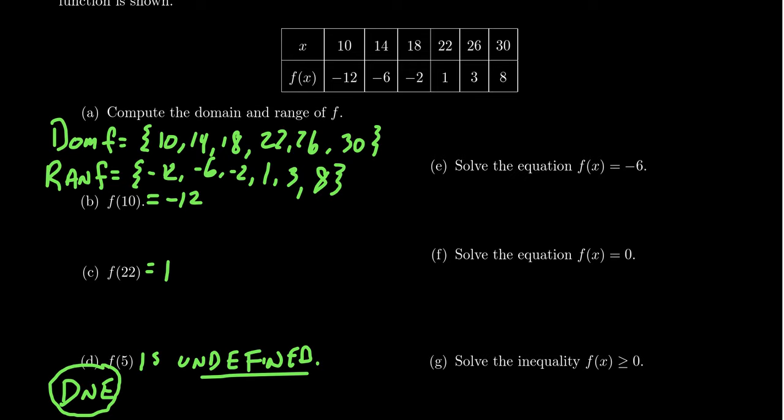It turns out solving equations with this tabular approach to functions is pretty nice as well. It's pretty simple. So if we want to solve the equation f of x equals negative 6, we have to look for any x coordinates whose y coordinate is negative 6.